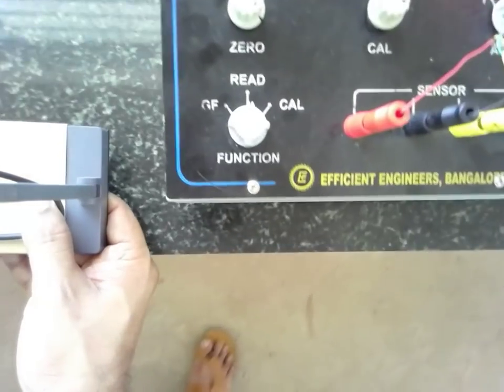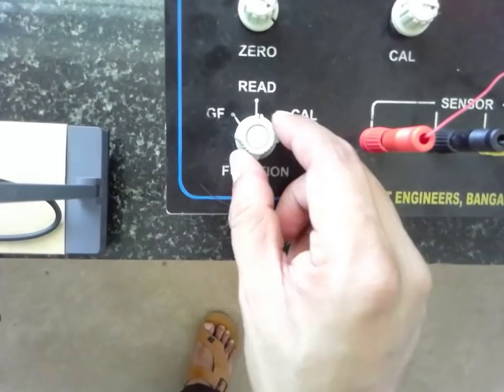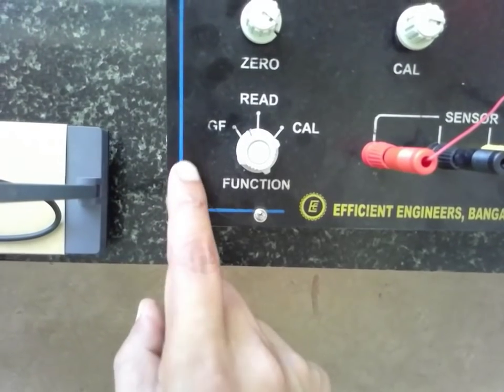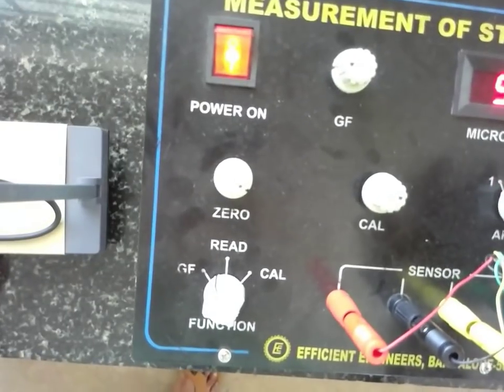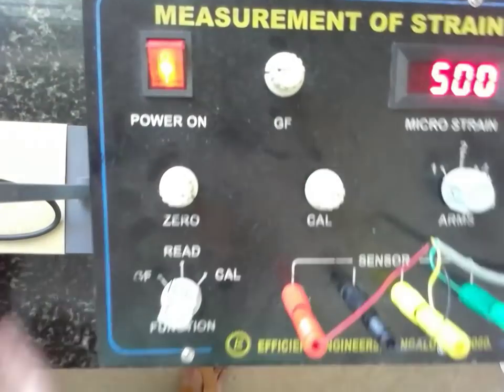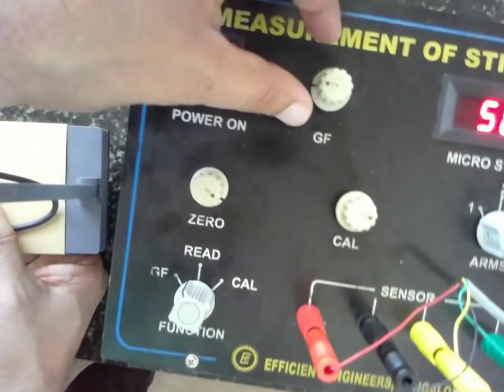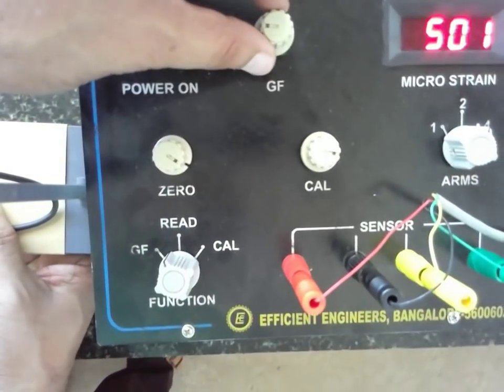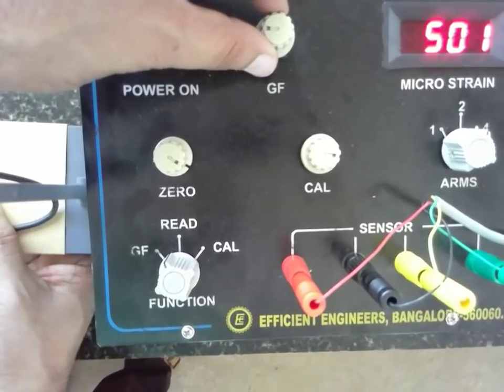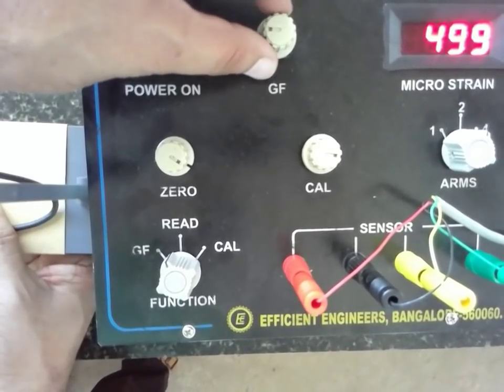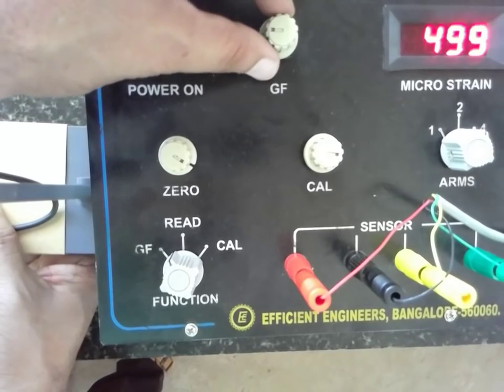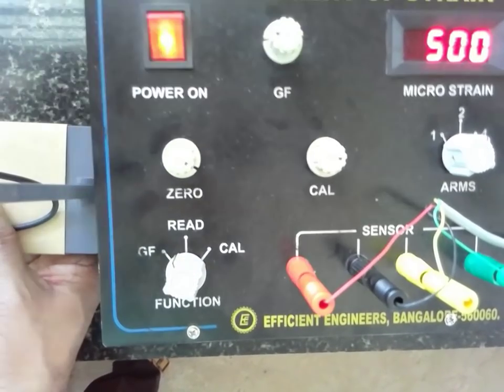Again with the function knob, make it rotate to GF. The GF knob has to be made fixed. It is fixed. Rotate this one and make it fixed.